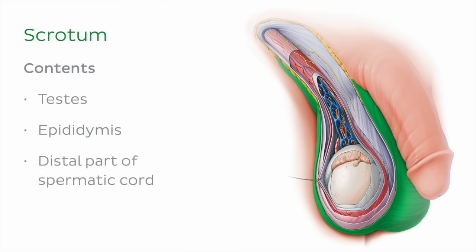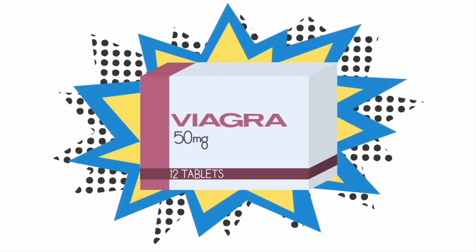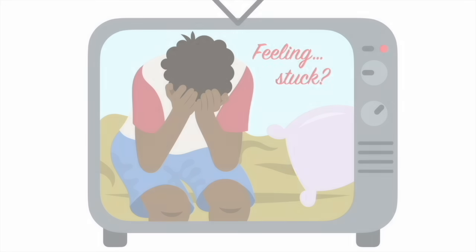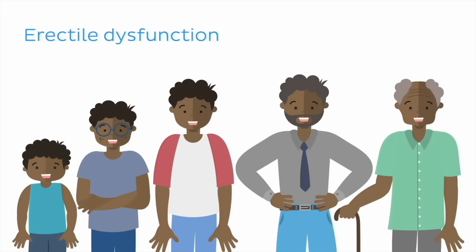So now that we've learned all about the male reproductive system, let's have a ball with a clinical scenario. Perhaps you've heard of the medication Viagra, or you've seen a TV commercial pertaining to males having difficulty achieving erections. Erectile dysfunction is a common condition that impacts most individuals with male anatomy transiently at some point, particularly those who are elderly.